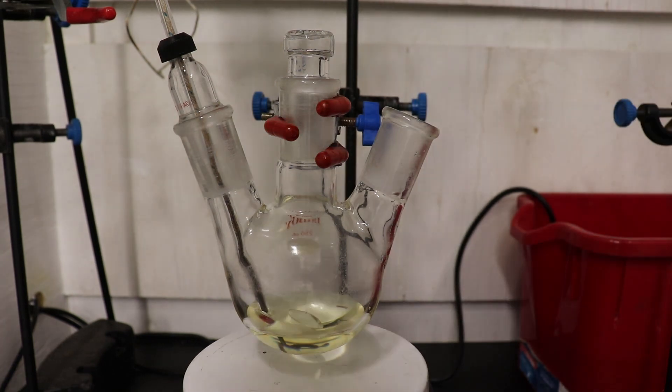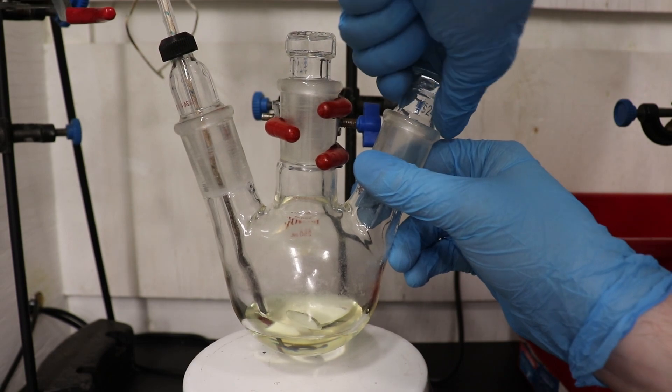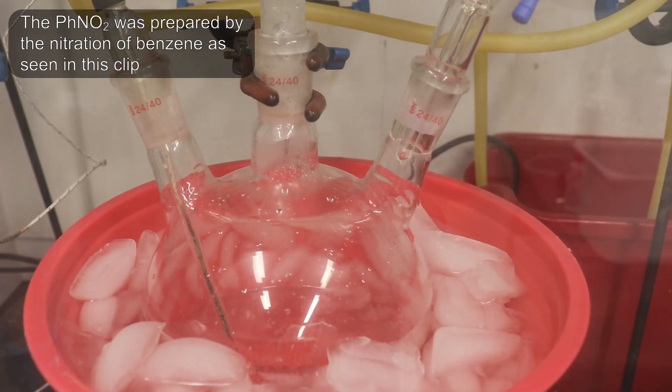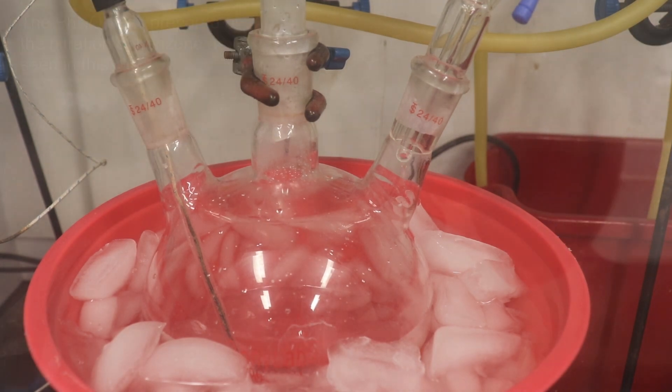Nitrobenzene is a pretty common solvent to use in Friedel-Crafts reactions, as the nitro group is strongly electron-withdrawing, which deactivates the aromatic ring, preventing it from acting as a nucleophile towards carbocations and acylium ions, while also being able to dissolve aluminum trichloride and whatever substrate you're working with.